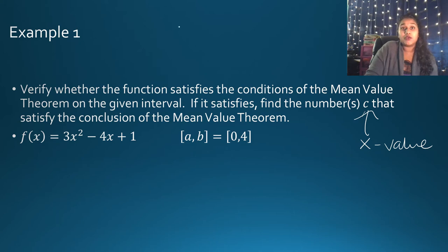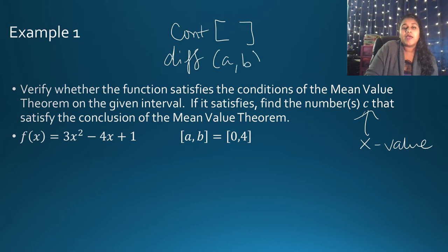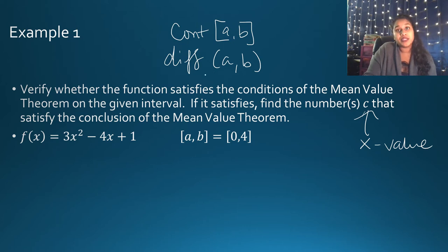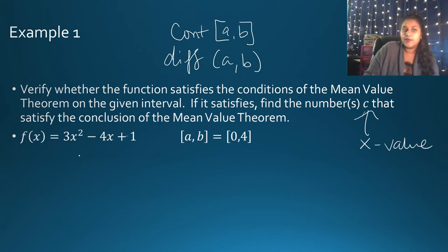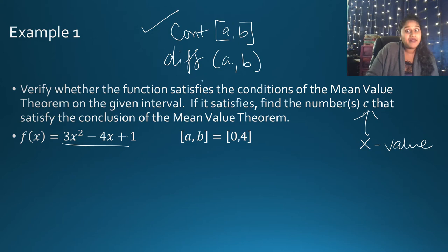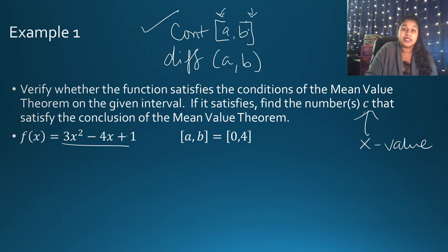What two conditions are we looking for? Is it continuous on a closed interval, and is it differentiable on an open interval? With continuity, we can test the endpoints; with differentiability, it's an open interval because we may not be able to differentiate at the endpoints. This function F(X) = 3X² - 4X + 1 is a polynomial, so it must be continuous everywhere, meaning F(A) and F(B) must exist — so the closed interval points exist.